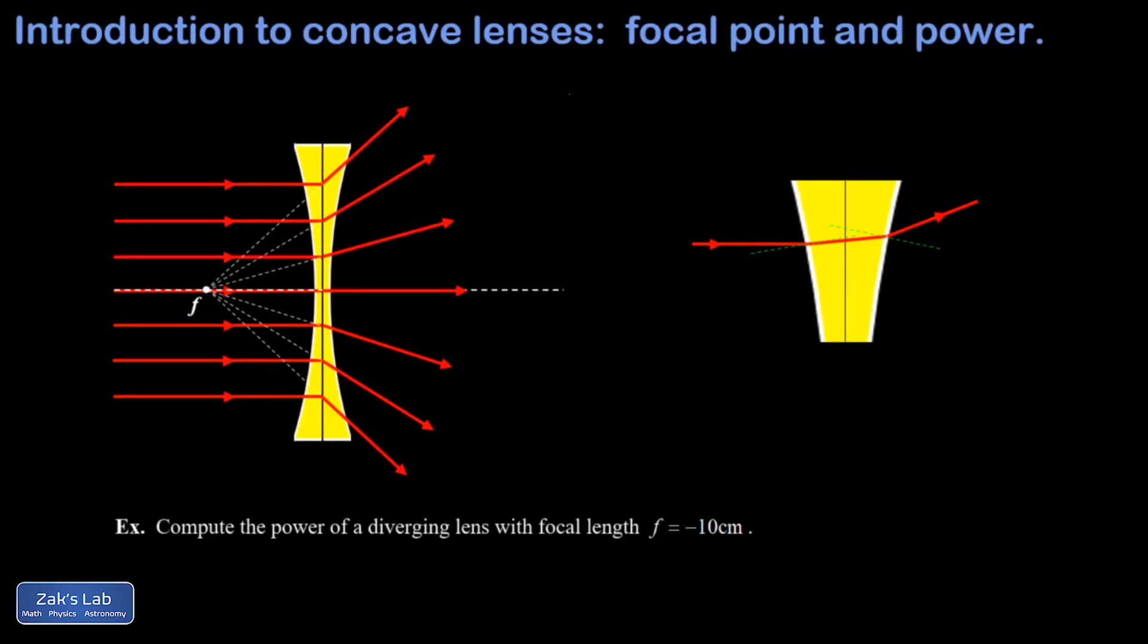In this video, we introduce diverging lenses, starting with a qualitative look at the refractions that cause parallel rays to diverge from a focal point, how to determine the focal length of the lens, how to identify the principal rays in a lens analysis, how to use ray diagrams to find the image formed by a diverging lens, and finally how to calculate the location and magnification of an image using the thin lens equation.